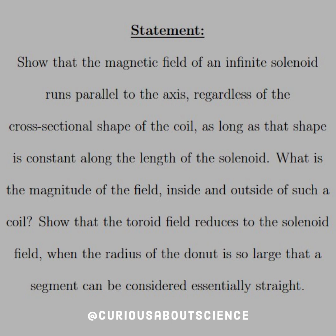What is the magnitude of the field inside and outside of such a coil? Show that the toroidal field reduces to the solenoid field when the radius of the donut is so large that a segment can be considered essentially straight.